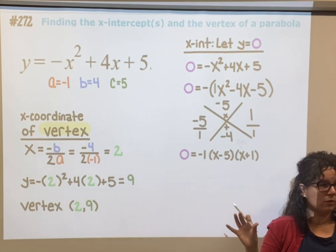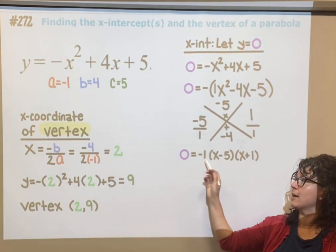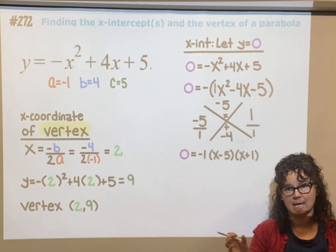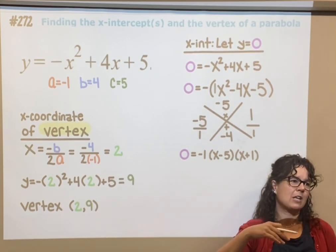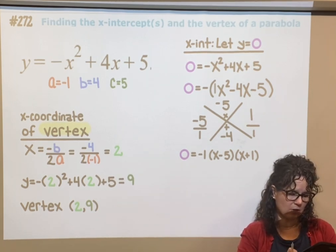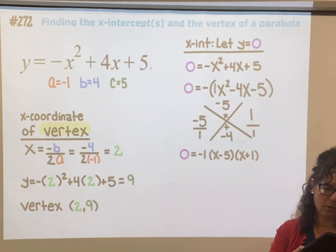Now that we have it in factored form, if things multiply together, negative 1 times this guy times this guy equals 0, then one of those has to be 0.